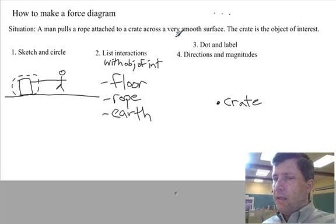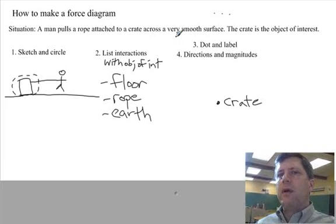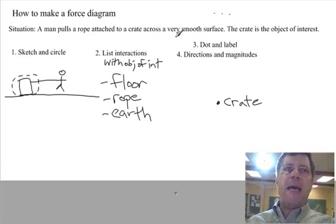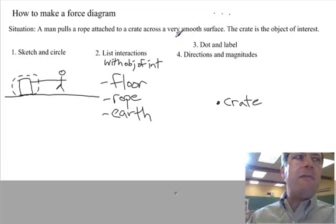Remember that? The size, the orientation, the shape of the object of interest is not important. We're simplifying it as a point particle. All right. We need a line for every interaction.